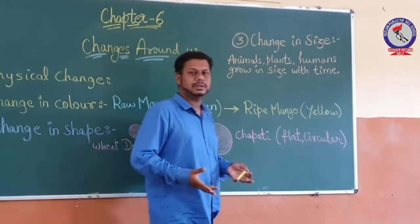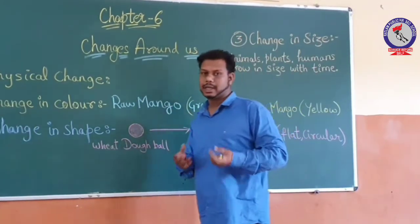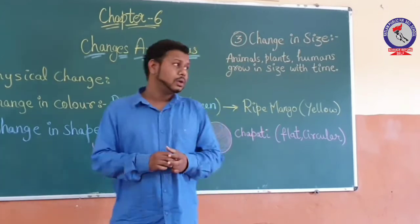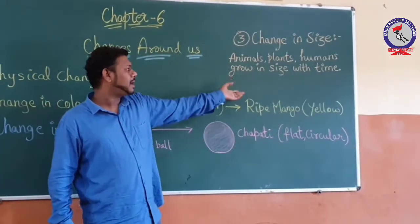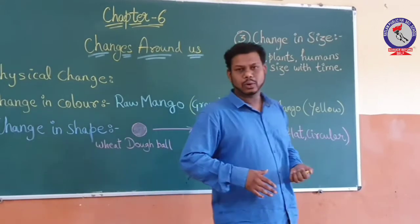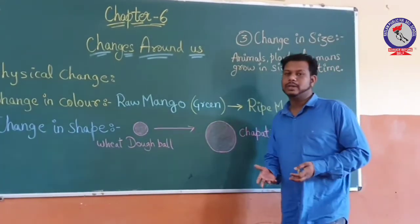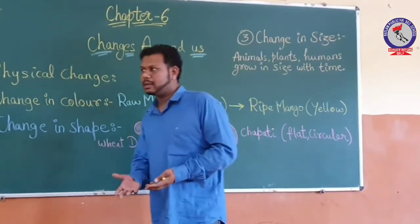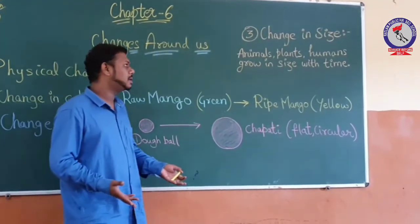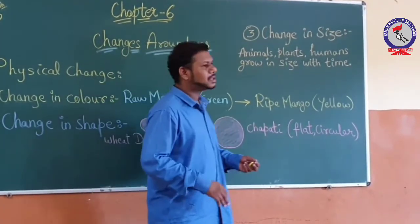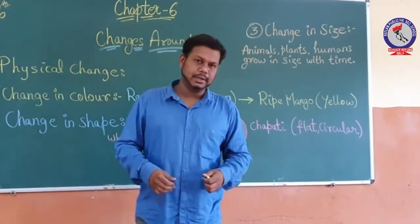The third thing is change in size. There are many objects around us that undergo a change in size. A simple example: animals, plants, and human beings — they grow in size slowly. The height of the tree increases, the size of animals and height of animals also increases.